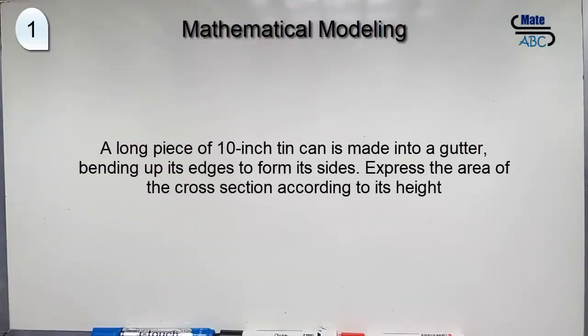Another example says like this. A long piece of 10-inch con-sheet will bend the edge up to form the sides of a gutter. Express the area of the cross-section of the gutter according to its height.